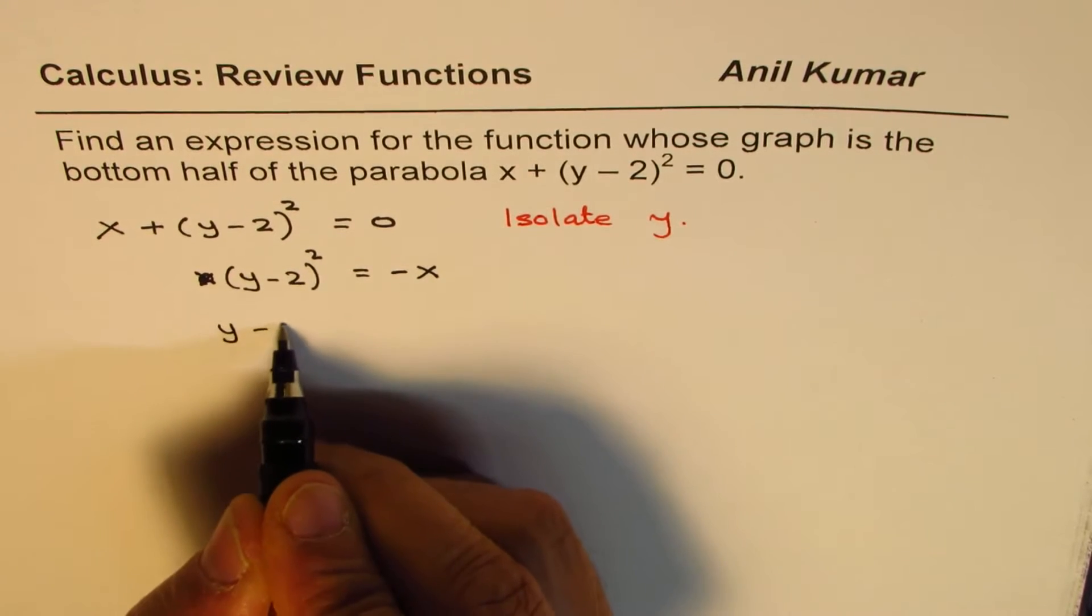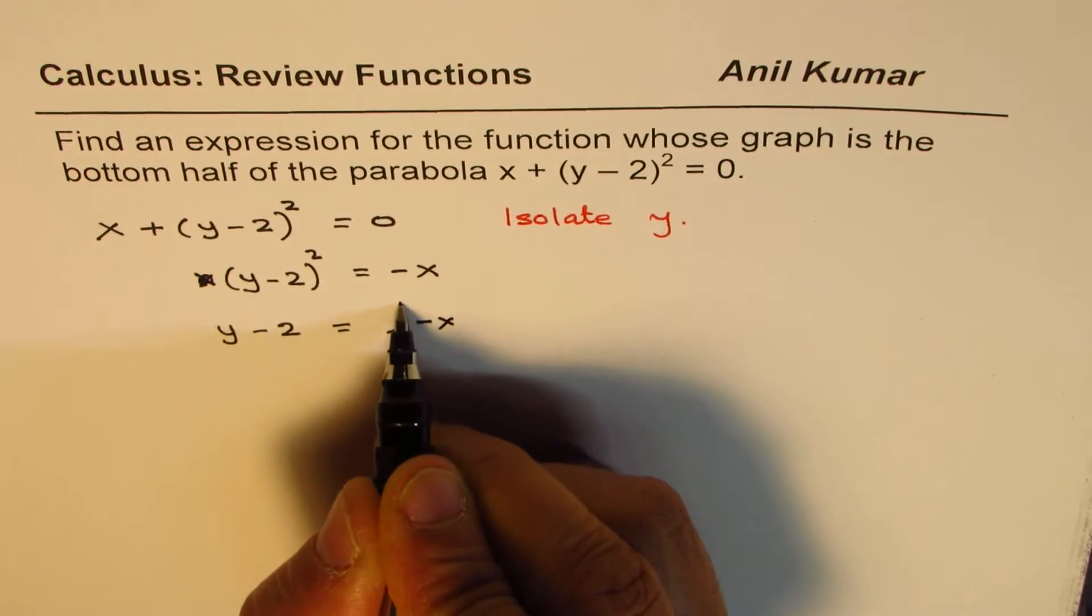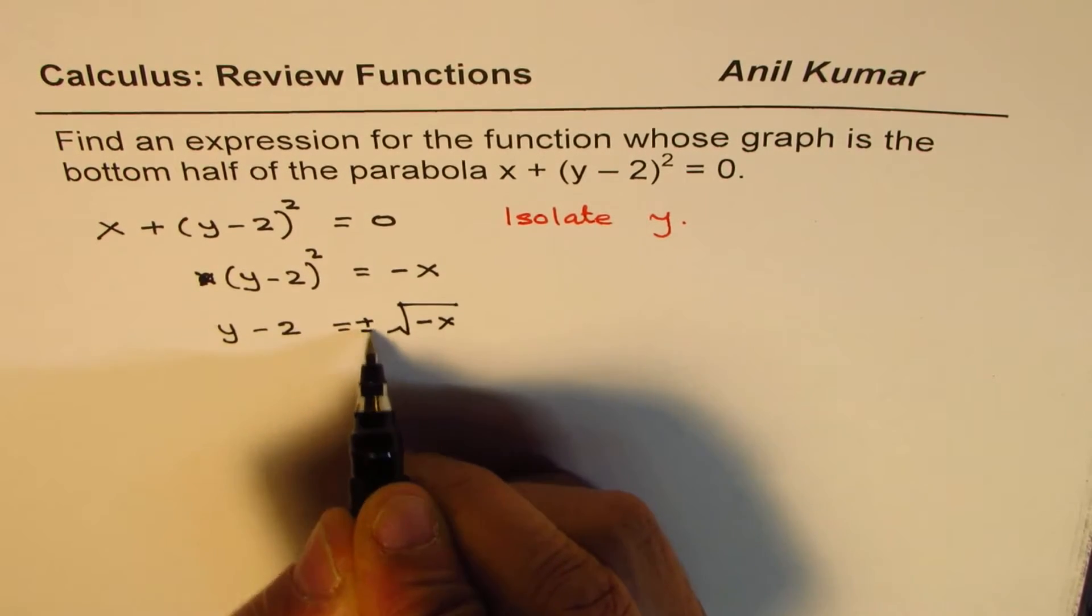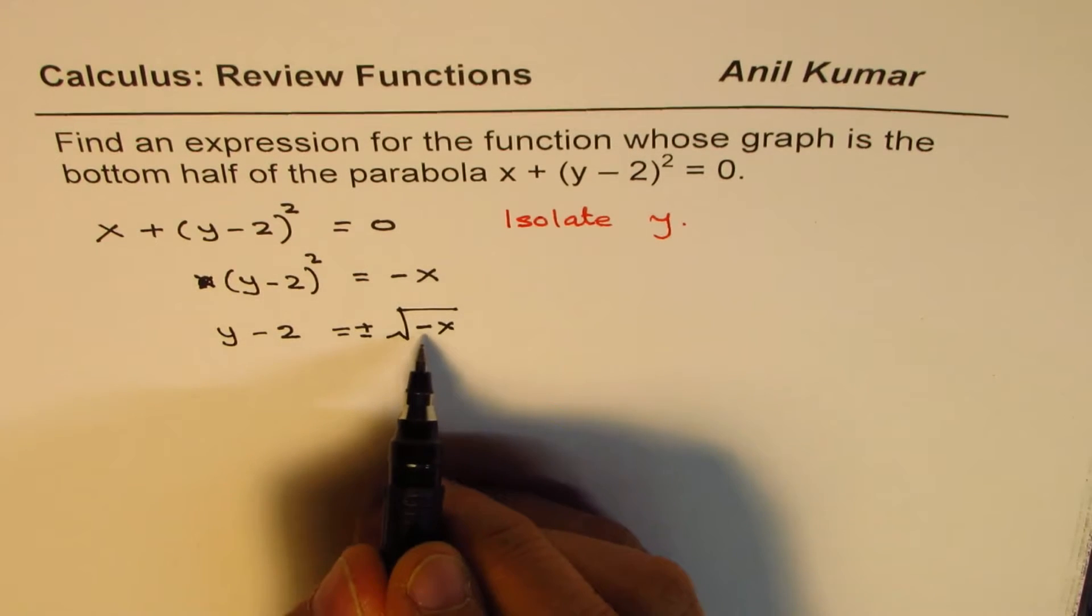Remember, whenever you square root, you should always take care of both positive and negative signs. The idea is that -2 squared is positive and +2 squared is also positive. So we do square root of negative x.